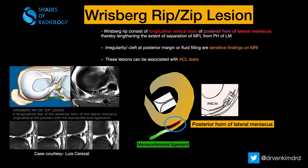This can be identified as a cleft — you can see a fluid-filled cleft at the posterior margin, or fluid signal on MRI. It is also postulated that these tears are associated with axial tears. To summarize, this is the classic Wrisberg rip or zip lesion, which gives a zip-like appearance involving the separation of the meniscofemoral ligament at the site of attachment of the posterior horn of the lateral meniscus. Thank you all.